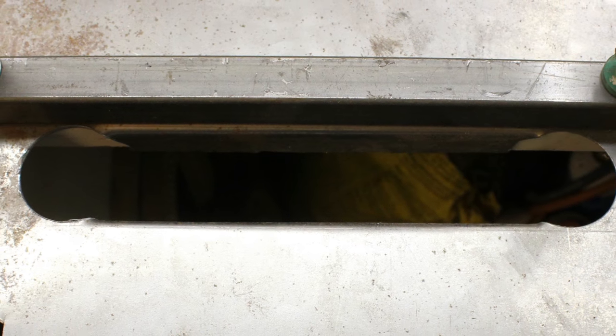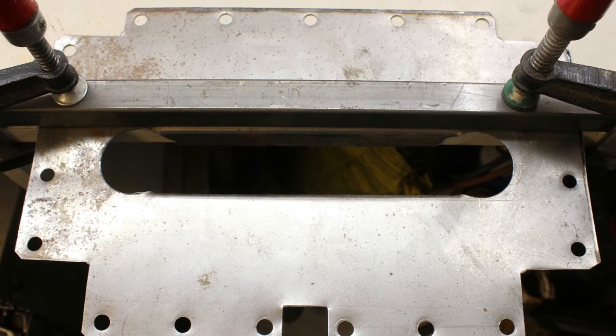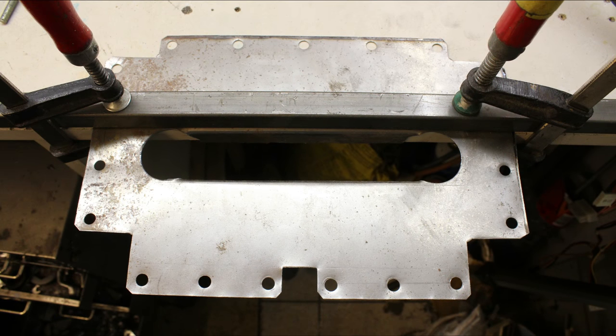Two metal sheets are used for the framework, one with bent flaps. With a square tube and two clamps you can bend the metal on your workbench using a hammer.